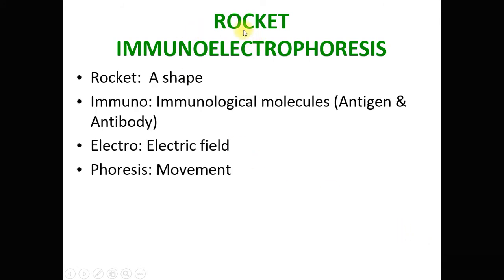The technique is called rocket immunoelectrophoresis. Let's see the different parts of this term. 'Rocket' is for the unique shape — the tail of the rocket. 'Immuno' is for the immunological molecules, which are antigen and antibody. 'Electro' is for the electric field. 'Phoresis' is for the movement.